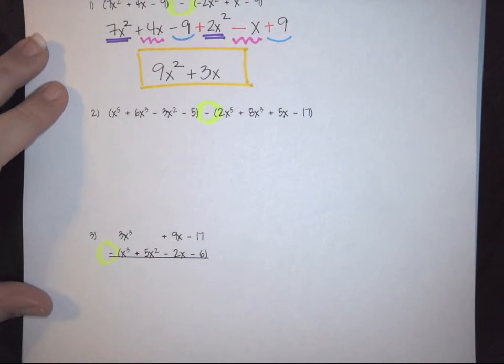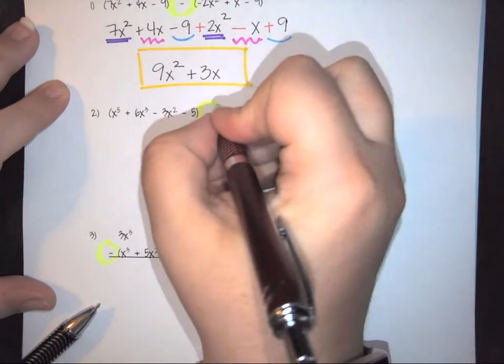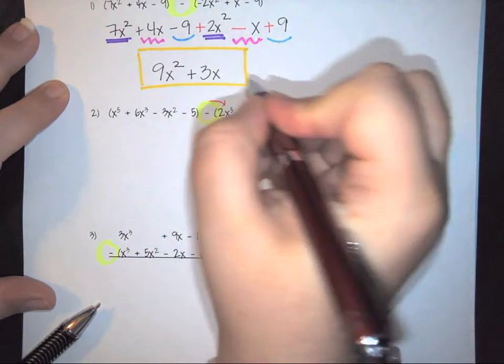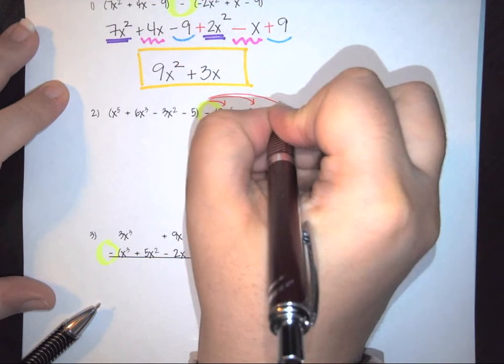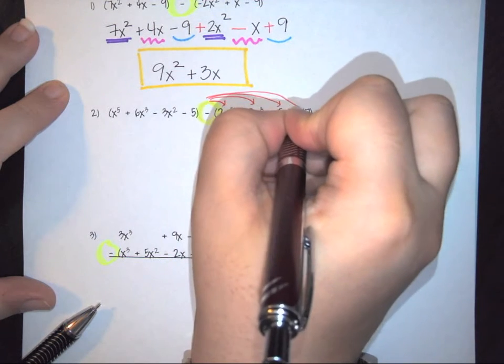All right, let's look at another one. Again, the first thing that I have to do is I have to distribute the negative through. So it has to come through into all terms of your parentheses.